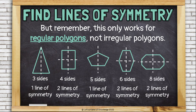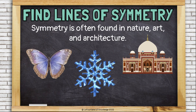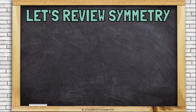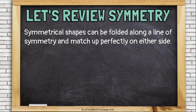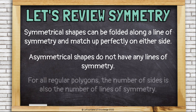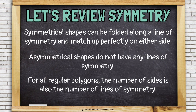Symmetry is often found in nature, art, and architecture. This butterfly has a line of symmetry, this snowflake has six lines of symmetry, and this building also has a line of symmetry. Let's review: symmetrical shapes can be folded along a line of symmetry and match up perfectly on either side. Asymmetrical shapes do not have any lines of symmetry. For all regular polygons, the number of sides is also the number of lines of symmetry.